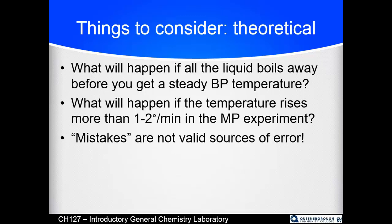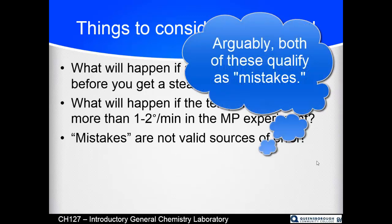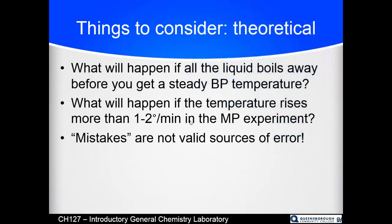Your compounds are pure, so you should have a nice steady boiling point exactly at the tabulated value, assuming your temperature probe is calibrated properly, and a narrow melting point range exactly at the tabulated value. Keep in mind that mistakes are not valid sources of error. If your heating rate was faster than one to two degrees per minute at the melting point, you need to repeat the experiment — you cannot cite heating too quickly as a source of error.